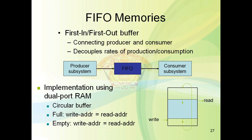In circular buffer form, data is written starting at the first memory location, then second, third, and so on — incrementing by one each time. When it reaches the last memory location, it wraps back to the 0th memory location. Similarly, the read address also increments and wraps from the last location back to location 0.